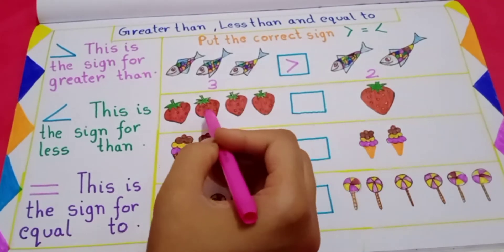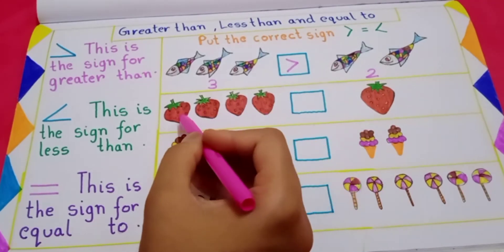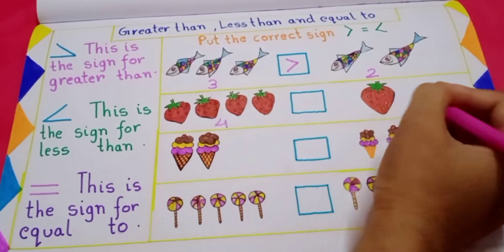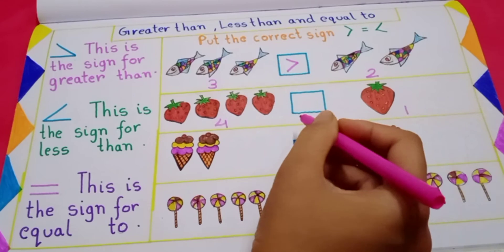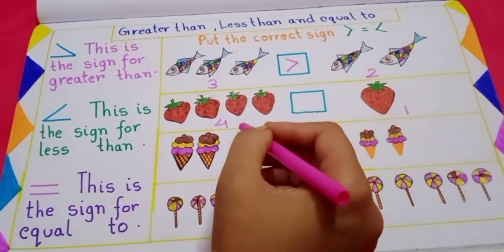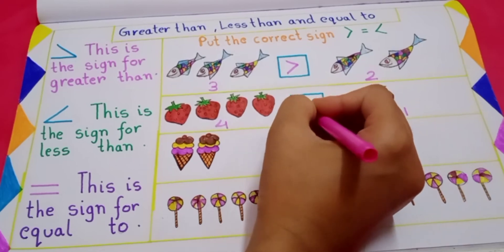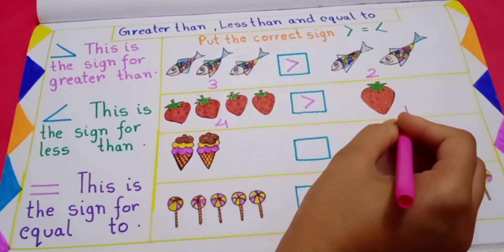Next, here how many strawberries? 1, 2, 3, 4. 4 strawberries. And here 1. Now which one is more? 4 is more, 1 is less, right. So put greater than sign. 4 is more than 1.